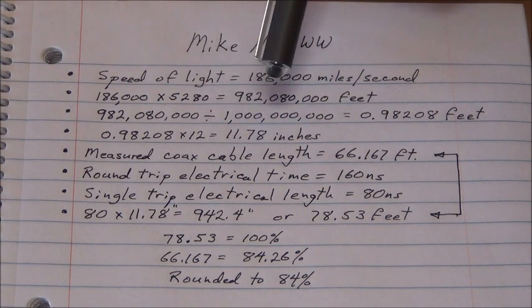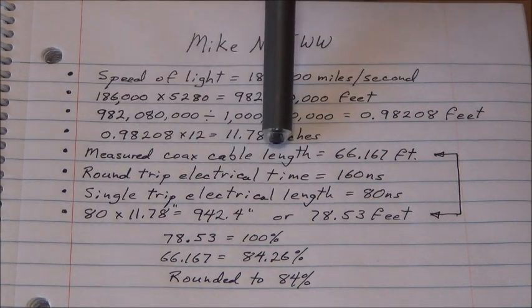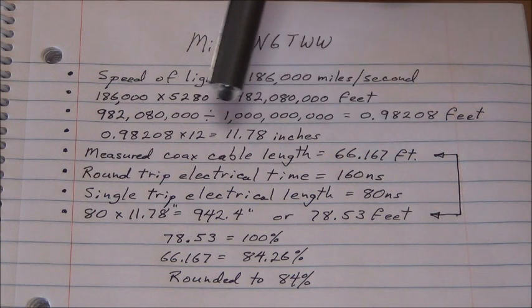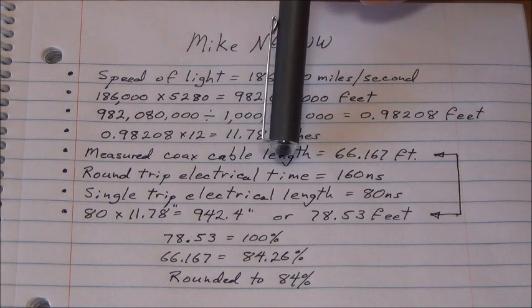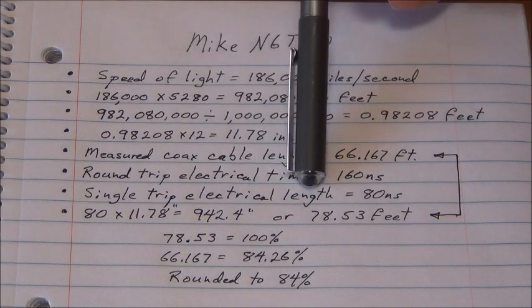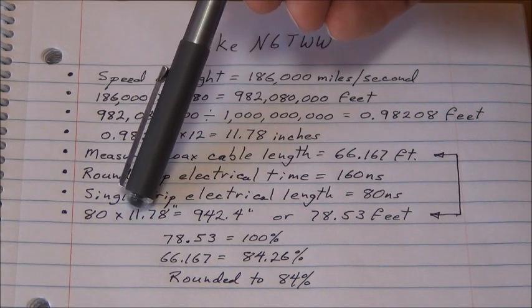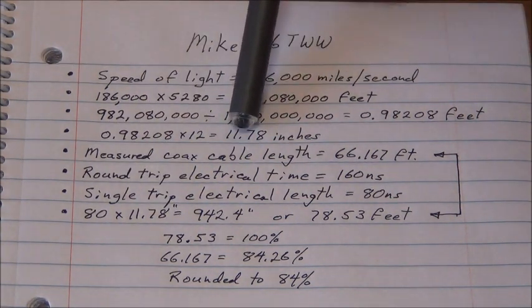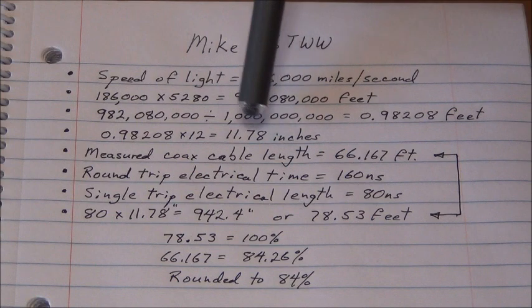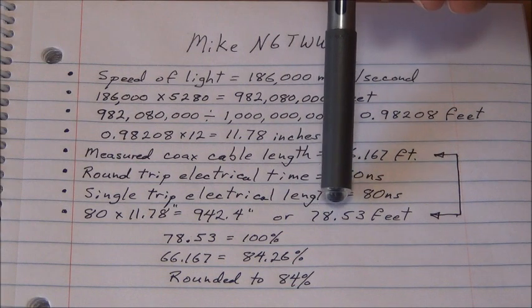Our measured coax length as I measured it was 66 foot 2 inches or 66.167 feet. The round-trip electrical time measured on the scope was 160 nanoseconds. So half of that for a single trip of the electrical length is 80 nanoseconds. So if we took 80 nanoseconds times 11.78—that's how our electrical signal travels per nanosecond in free space—that equals 942.4 inches or 78.53 feet.